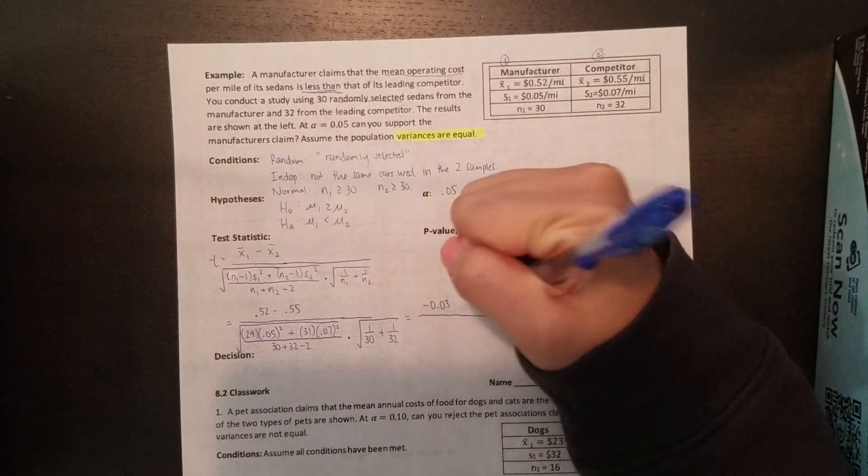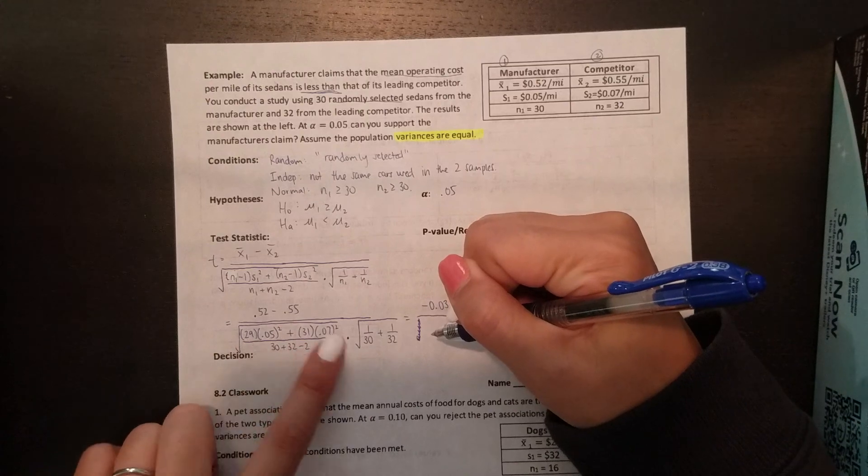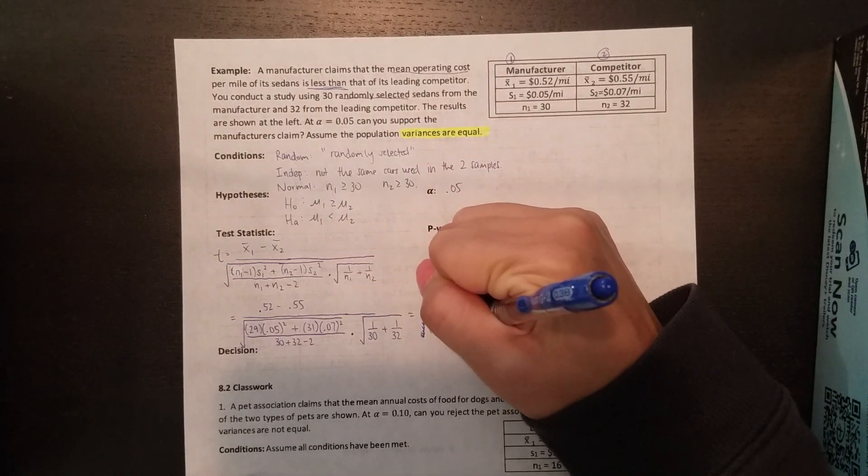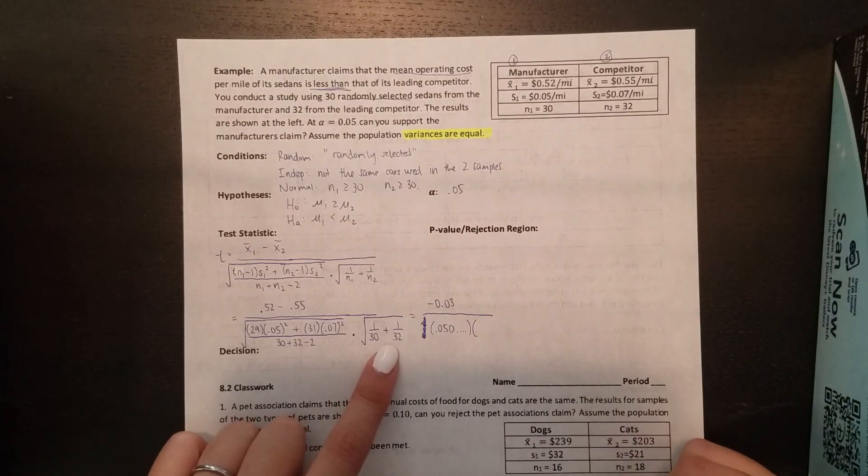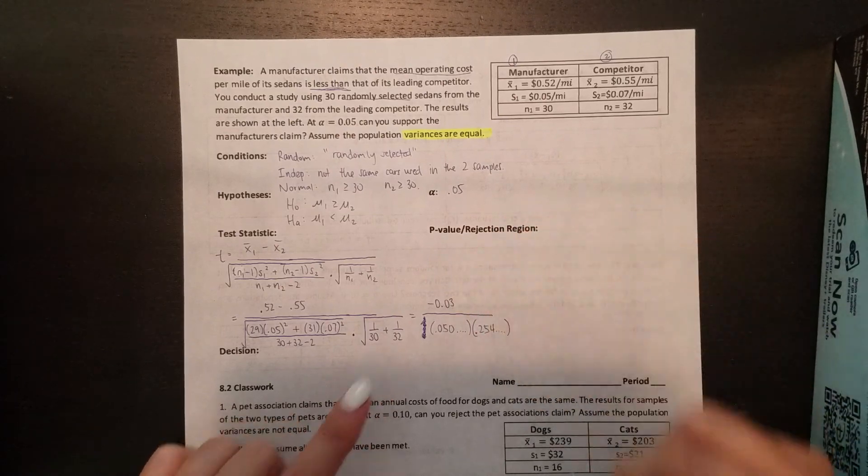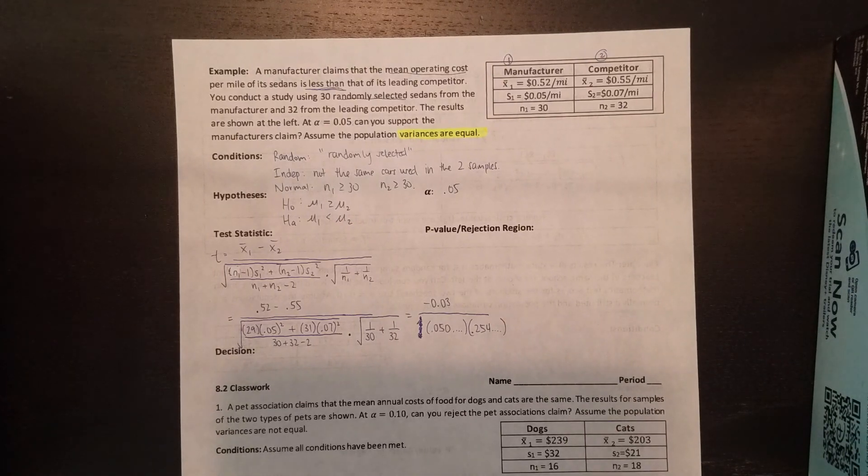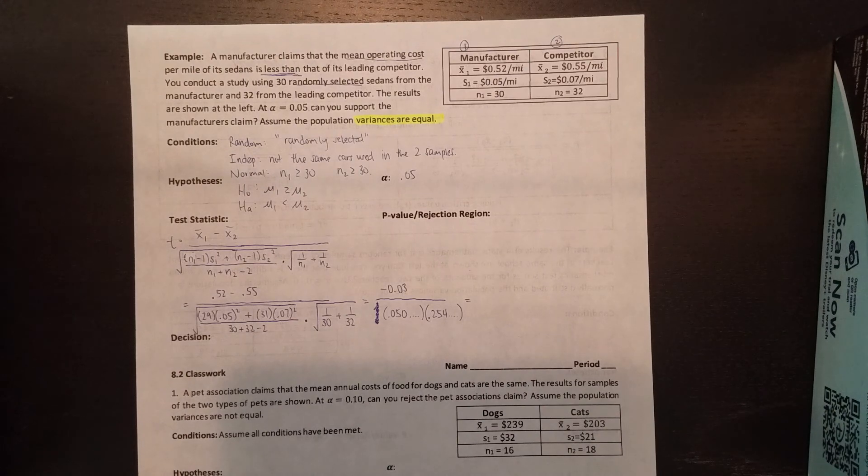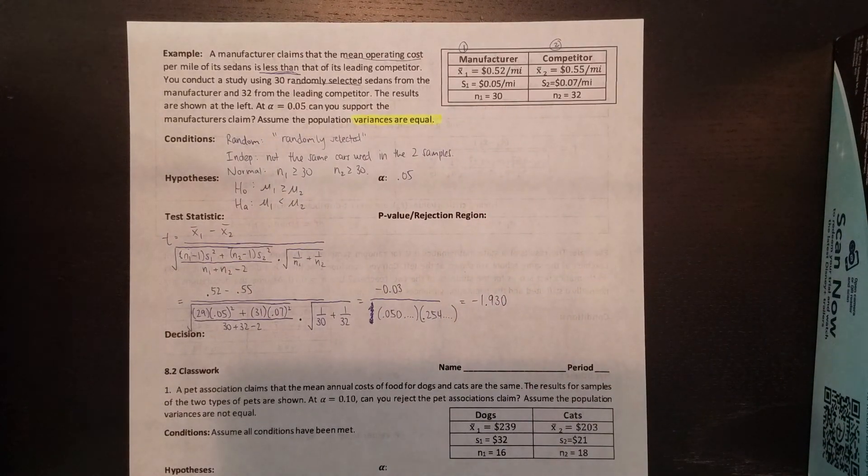So on top, you're going to get negative 0.03. On the bottom, when you type this into a calculator, these are the numbers you should get. The first square root, you should end up with something like 0.050 something, something, something, lots of decimals. And then the second square root, I think you end up with 0.254 something, something, something. If you're having trouble multiplying this out or typing this into your calculator, please let me know. I would love to help you. Just come see me on my office hours. But there's too many people with different calculators, so I can't do that all at once in a video. Then, once you have these set up, you should end up with negative 1.930 something. I'll leave it there. So that's our test statistic.